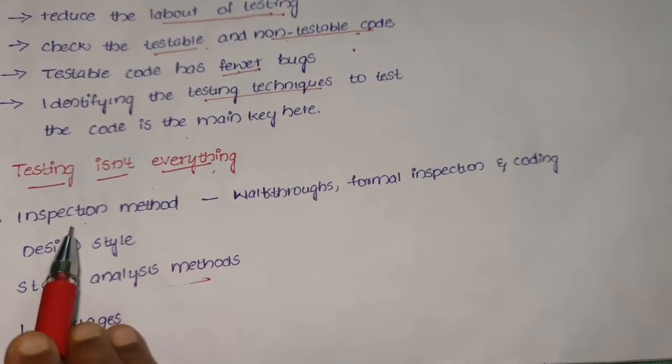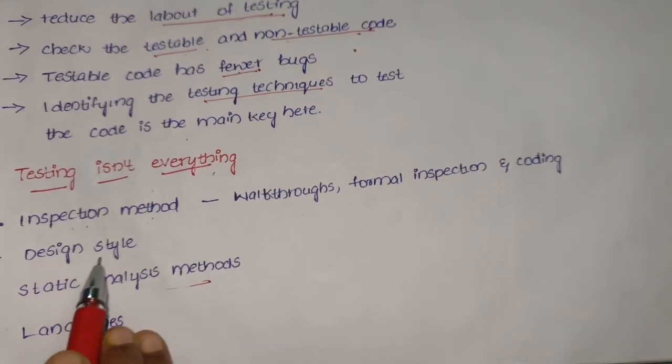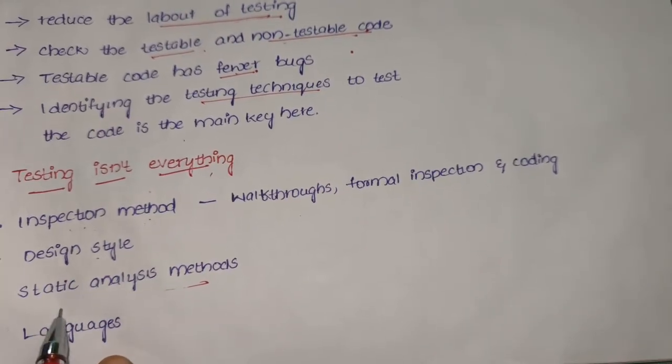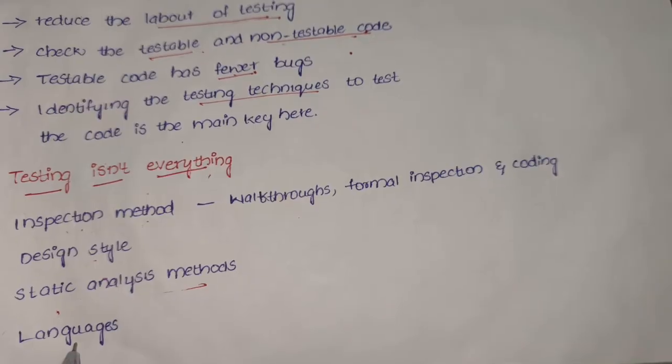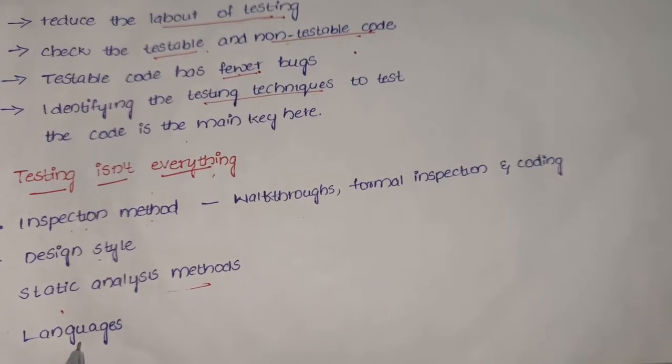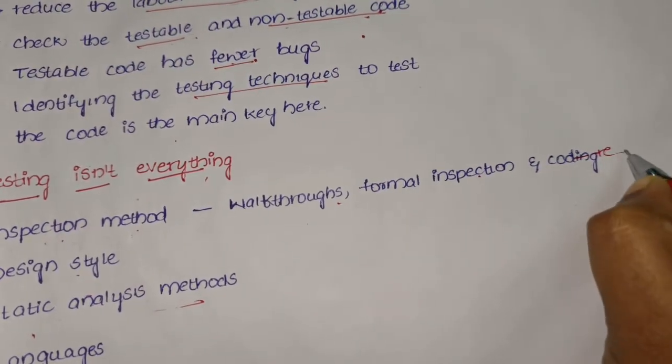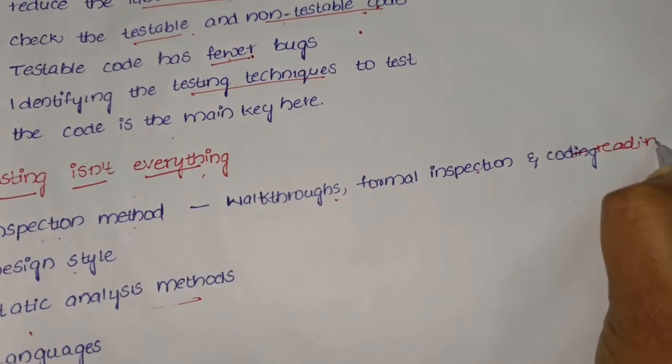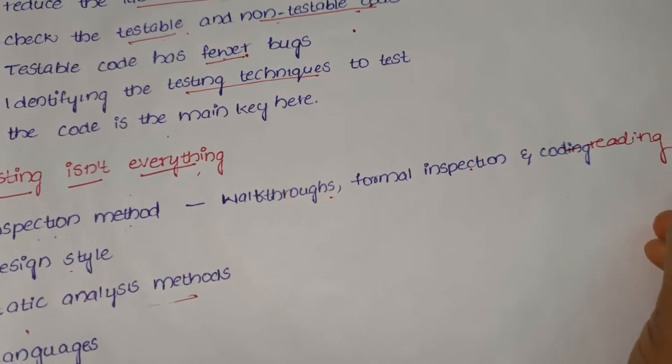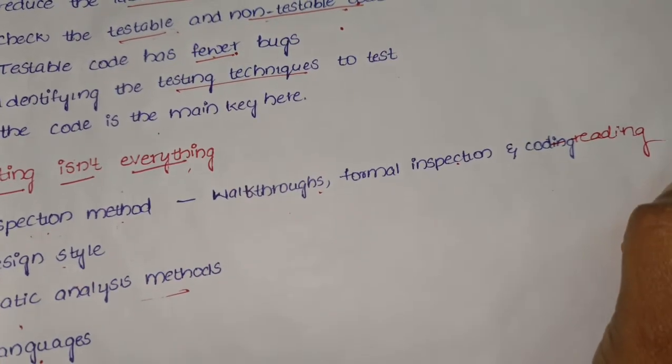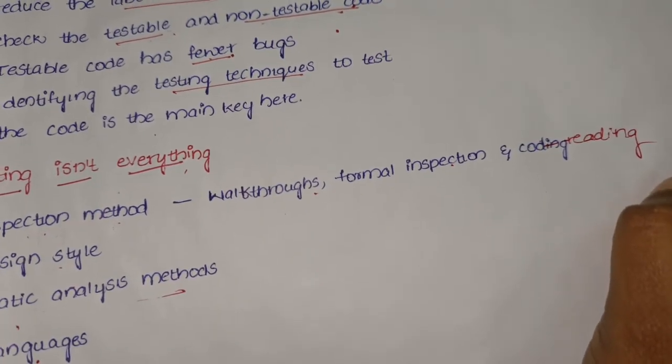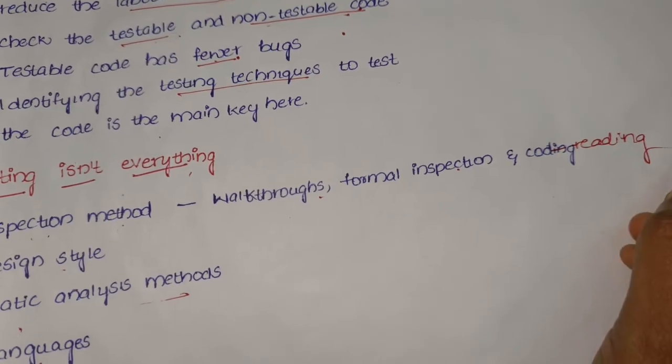There are four approaches other than testing to create better software. The inspection method includes walkthroughs, formal inspection, and code reading. These appear to be as effective as testing, but the bugs caught do not completely overlap.